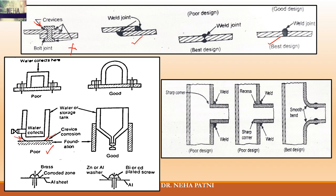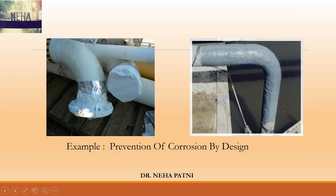If your design allows water to collect, it creates poorly oxygenated and richly oxygenated areas — concentration cell corrosion. Redesign to allow easy air circulation. If two dissimilar metals are in contact, use a washer in between. Ensure sharp corners and recesses are eliminated; a smooth bend is a better design to prevent liquid accumulation.